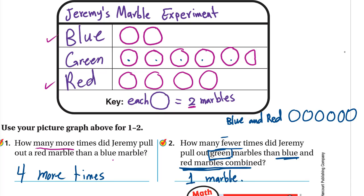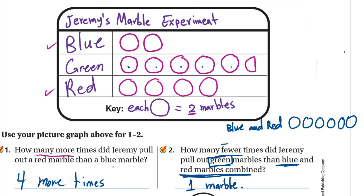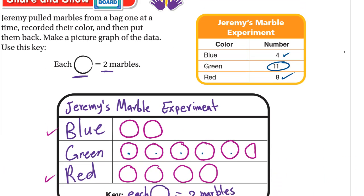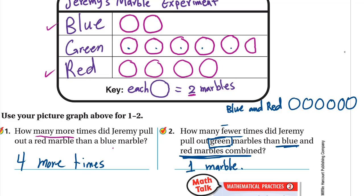This is the way to get it from the picture graph, and you could get it without the picture graph using the table. You could add the blue and red, 4 plus 8 is 12, then subtract the 11, so the answer is also 1. For number one, you could also get it from the table by subtracting the red and blue: 8 minus 4 equals 4. Hope you guys understand this lesson. Have a nice day and goodbye.